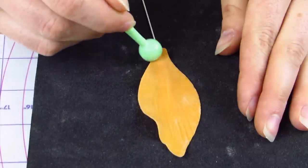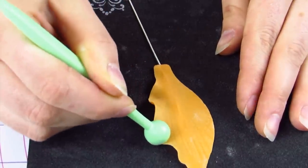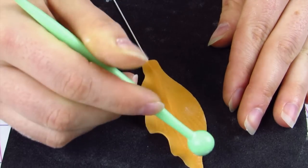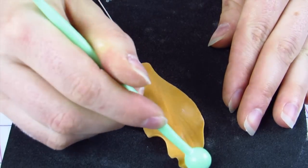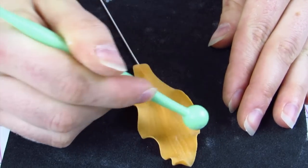Now using a thin foam mat and a balling tool I'm just going to push along the edge of my petal. Using my balling tool and that's going to give it this really nice ruffle effect.